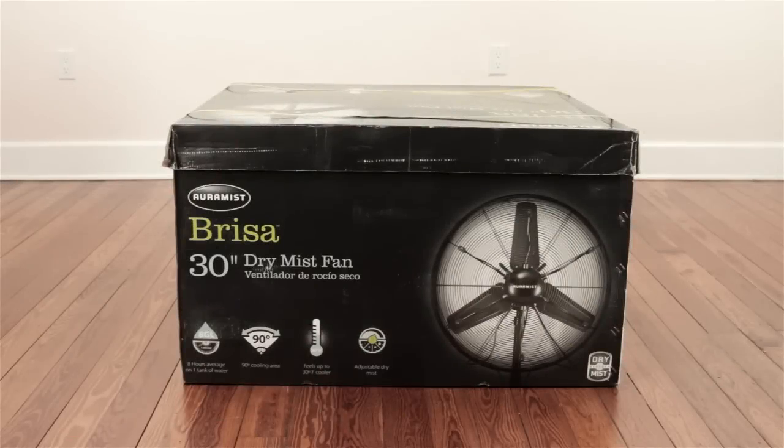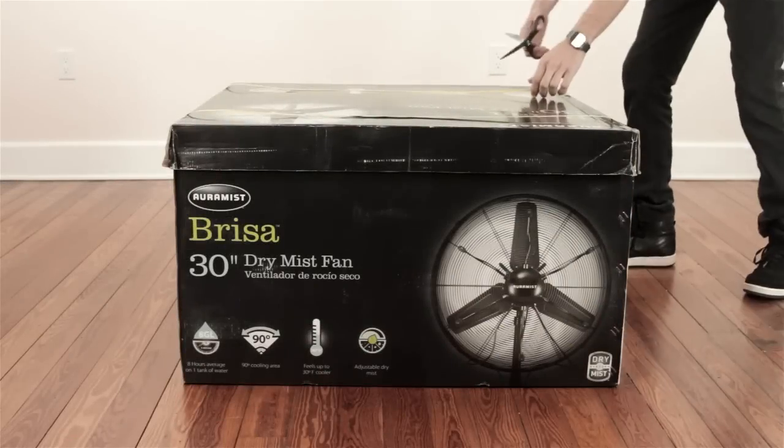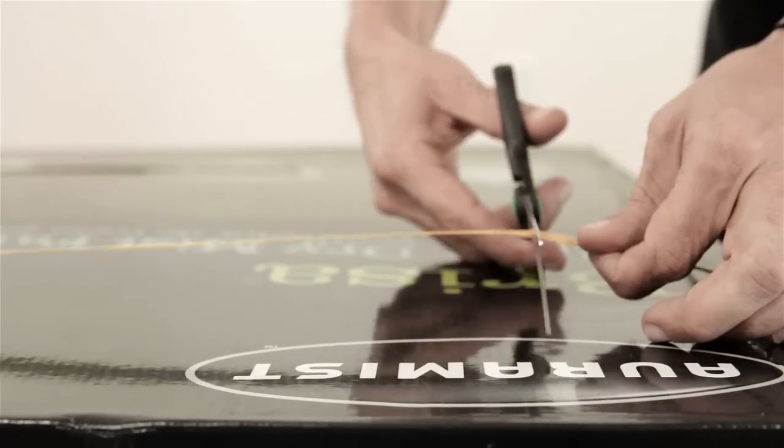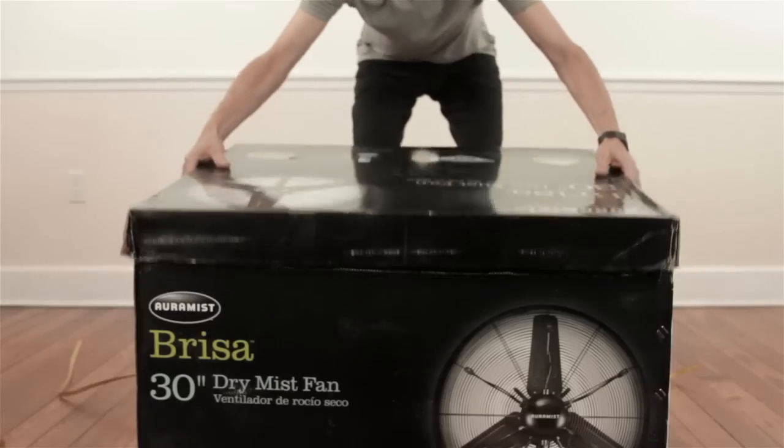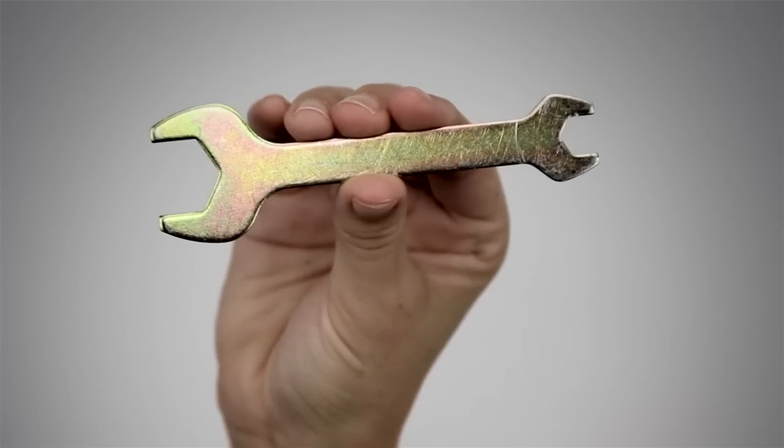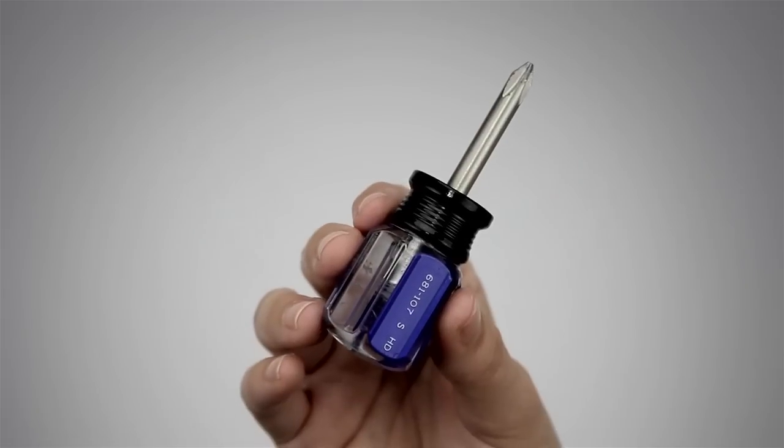This video is to assist you in the assembly and operation of your new Aura Mist Brisa. We've created this step-by-step instructional video to help you get the most out of your Brisa. To assemble your new Aura Mist Brisa 30-inch Dry Mist Cooling System, we recommend using two human beings, the wrench provided with your Brisa, and a Phillips-head screwdriver of your choice. Let's get started.